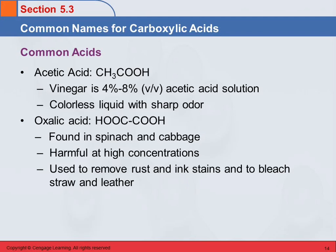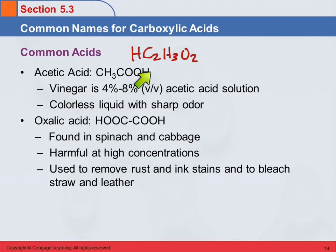There are some very common carboxylic acids. One of them is acetic acid, which we run across in general chemistry. In general chem we write it as HC₂H₃O₂, and it always seems like a very odd polyatomic ion — the acetate ion. Now that we're learning about carboxylic acids, it makes a little more sense. There are two carbons, the three hydrogens in the middle, the two oxygens, and then this hydrogen. Acetic acid is found in vinegar — usually about 4% to 8% acetic acid in water — and it has a very distinctive vinegar smell, a very sharp odor.